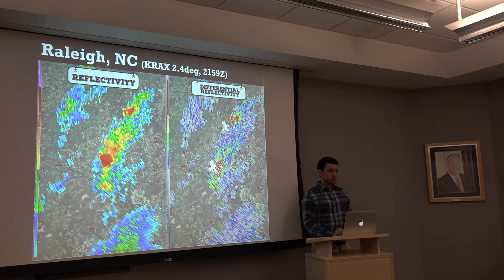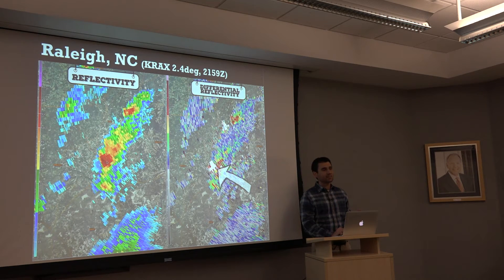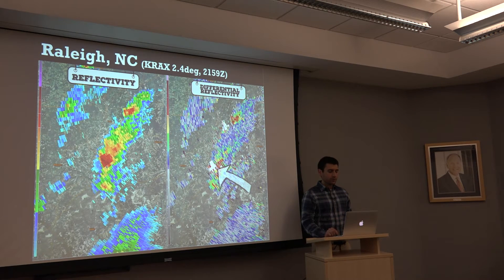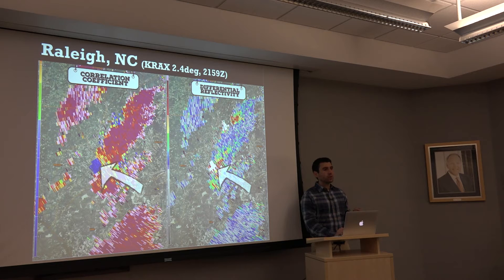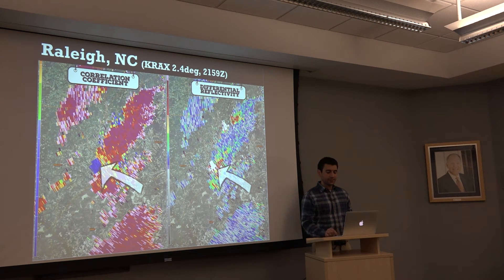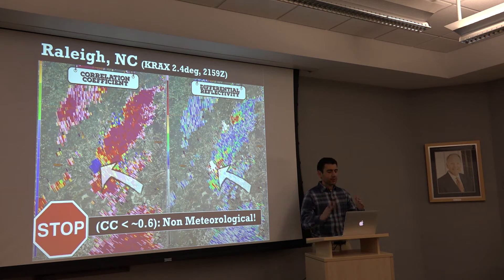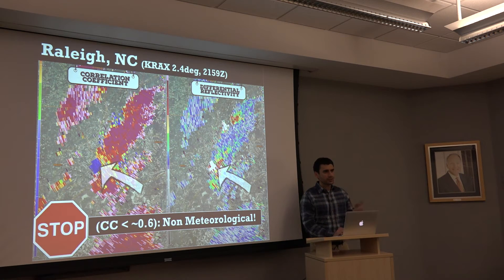Moving forward in time, there's something interesting — I've spotted a monstrous ZDR column now on the back edge, in an area where we might expect the updraft positioning itself on the southwest flank. But we're going to look at correlation coefficient — CC tells us whether something is meteorological or not. Look at how low these CC values are: 0.5, 0.4, 0.3 — those are non-meteorological returns. What we're dealing with here is a three-body scatter spike from hail causing these high values of ZDR. So the big stop sign here: CC at 0.6 or lower is non-meteorological. We don't want to use data overlapping that low CC to claim it's a ZDR column — that's where we use correlation coefficient to tell us how much we can trust the data.